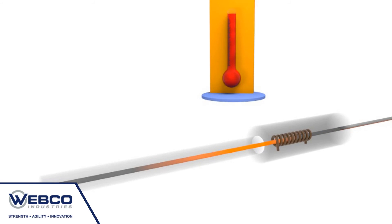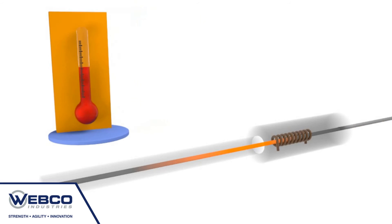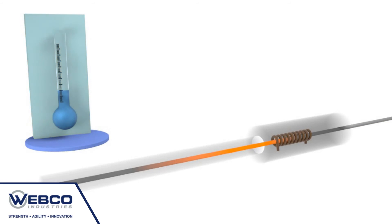Once the tubing exits the induction coil, it is rapidly cooled. The cooling process prevents the formation of detrimental second phases that have a negative effect on the corrosion resistance of the high-performance alloys.